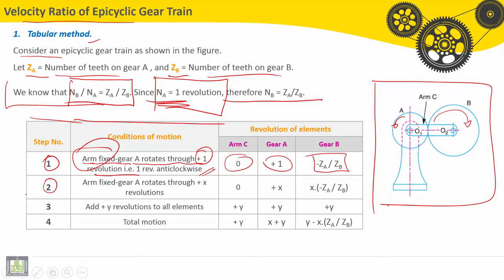Second configuration: arm is fixed, so velocity or speed is still zero. Gear A rotates through plus X revolutions, anti-clockwise.